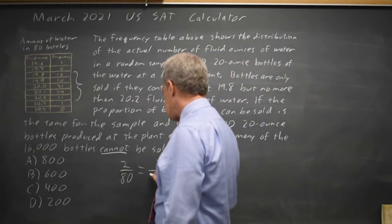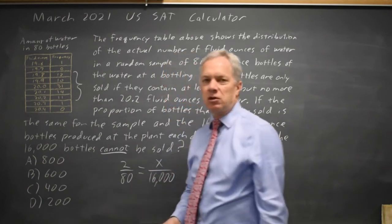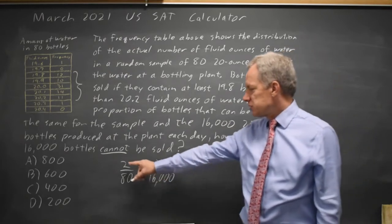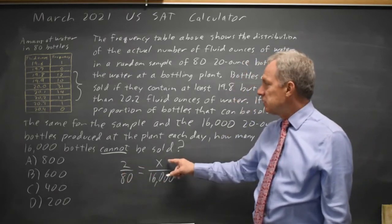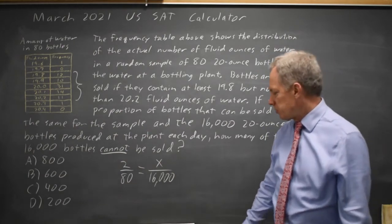So that's X over 16,000 equals 2 over 80 because the proportion of the sample is 2 out of 80 and the proportion of the entire production run is X out of 16,000.